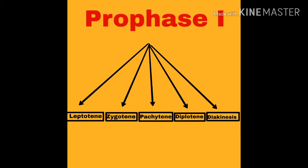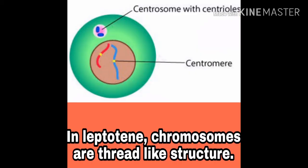जैसे कि आपको पता है, meiosis में prophase के भी पाँच पार्ट पढ़ते हैं: leptotene, zygotene, pachytene, diplotene, and diakinesis. So let's start with the first stage — leptotene.